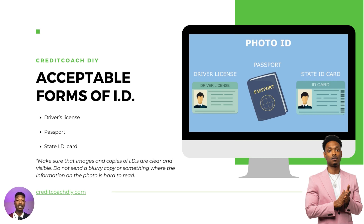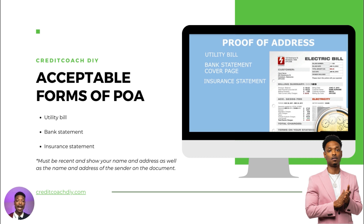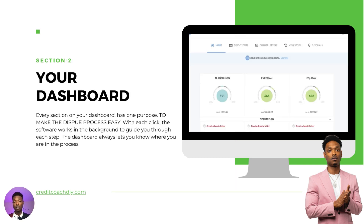If you act like you don't care, then you're not going to get the results and the bureaus aren't going to care. Imagine if you tried to take the bureaus to court and submitted a blurry copy of your ID — a judge would say you don't care about your own case. For proof of address, the bureaus need to verify it's you — it needs to be either a utility bill, bank statement, or insurance statement, and it needs to be recent. Your name and address needs to be visible on the document, along with the name and address of the lender or company.